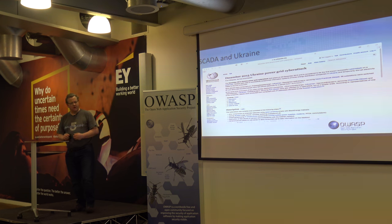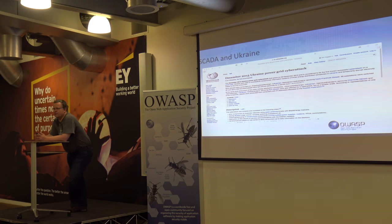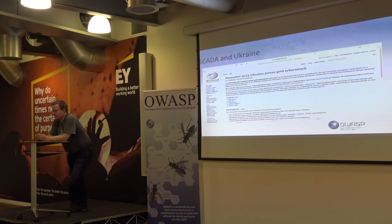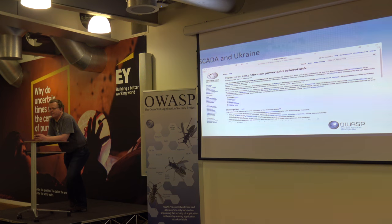Back in 2005, Russia took out the Ukraine power grid because they decided they didn't like Ukraine and wanted to teach them a lesson. It was an interesting exercise because the Ukrainian power grid, while old, is still using technology that we use in the West.